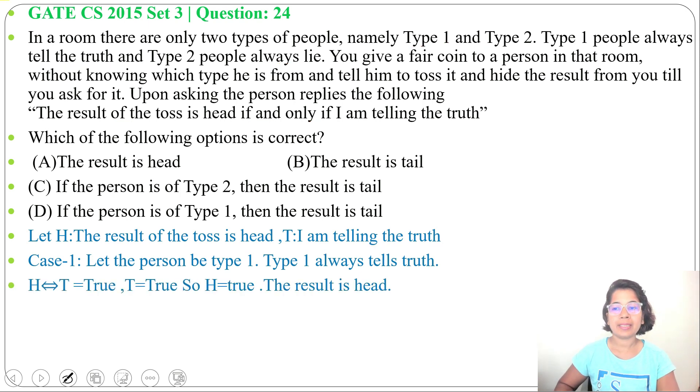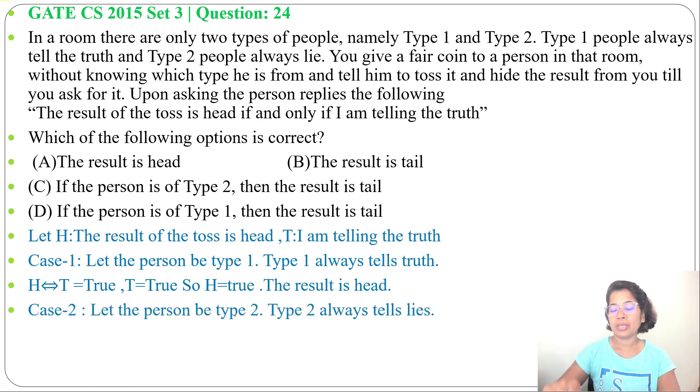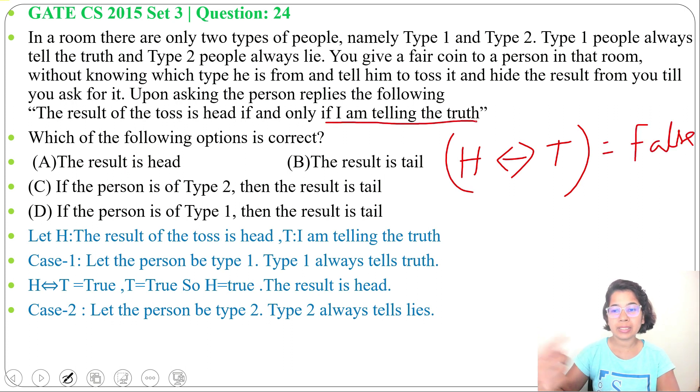Now Case 2: let that person is from Type 2, means that person is telling the lie. So in case of person is telling lie, H double implication T, that whole will be false, and that person telling truth is false, means this T value is false. So in case of biconditional, it will be false if either one true one false, means both have different truth value. Now T truth value is false, so H truth value should be true. Then only true biconditional false will be false.